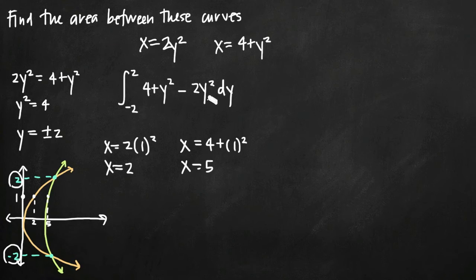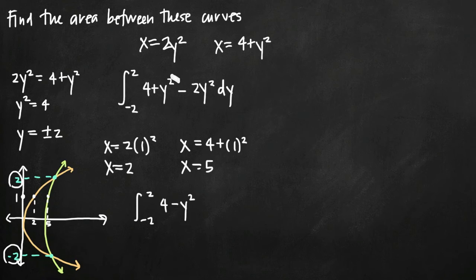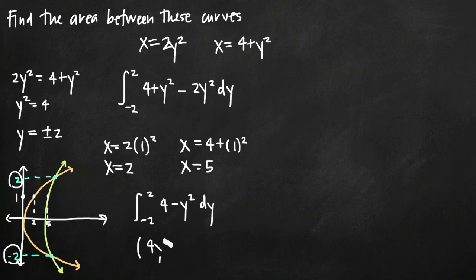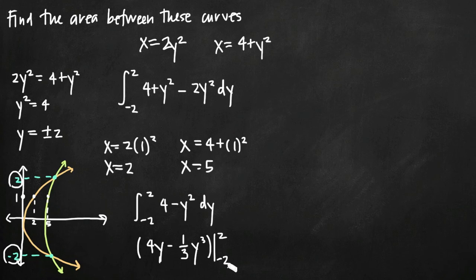Now we just need to simplify this integral, integrate, and then plug in our limits of integration. The integral from negative 2 to positive 2 of (4 plus y squared minus 2y squared) dy simplifies to the integral of (4 minus y squared) dy. Using the power rule to integrate, we get 4y minus one-third y cubed, evaluated on the range negative 2 to 2. Remember that with a definite integral you plug in the top number first and subtract whatever you get when you plug in the bottom number.